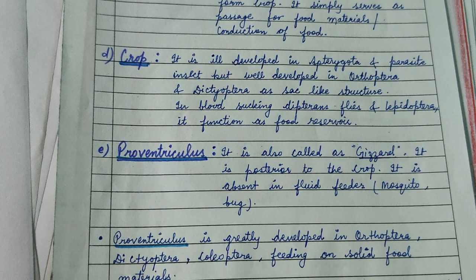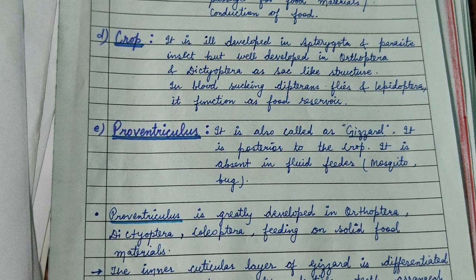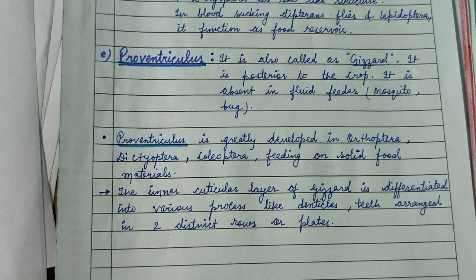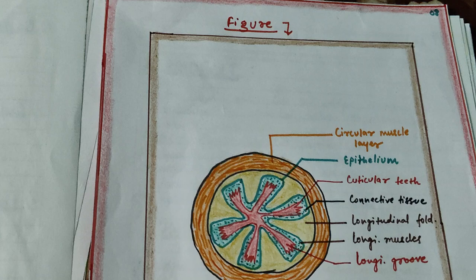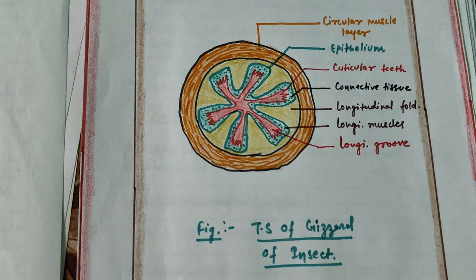The proventriculus, or gizzard, is posterior to the crop and is absent in fluid feeders like mosquitoes and bugs. It is greatly developed in Orthoptera like cockroach, Dictyoptera, and Coleoptera (beetles) feeding on solid food materials. Here is a picture of the gizzard or proventriculus.